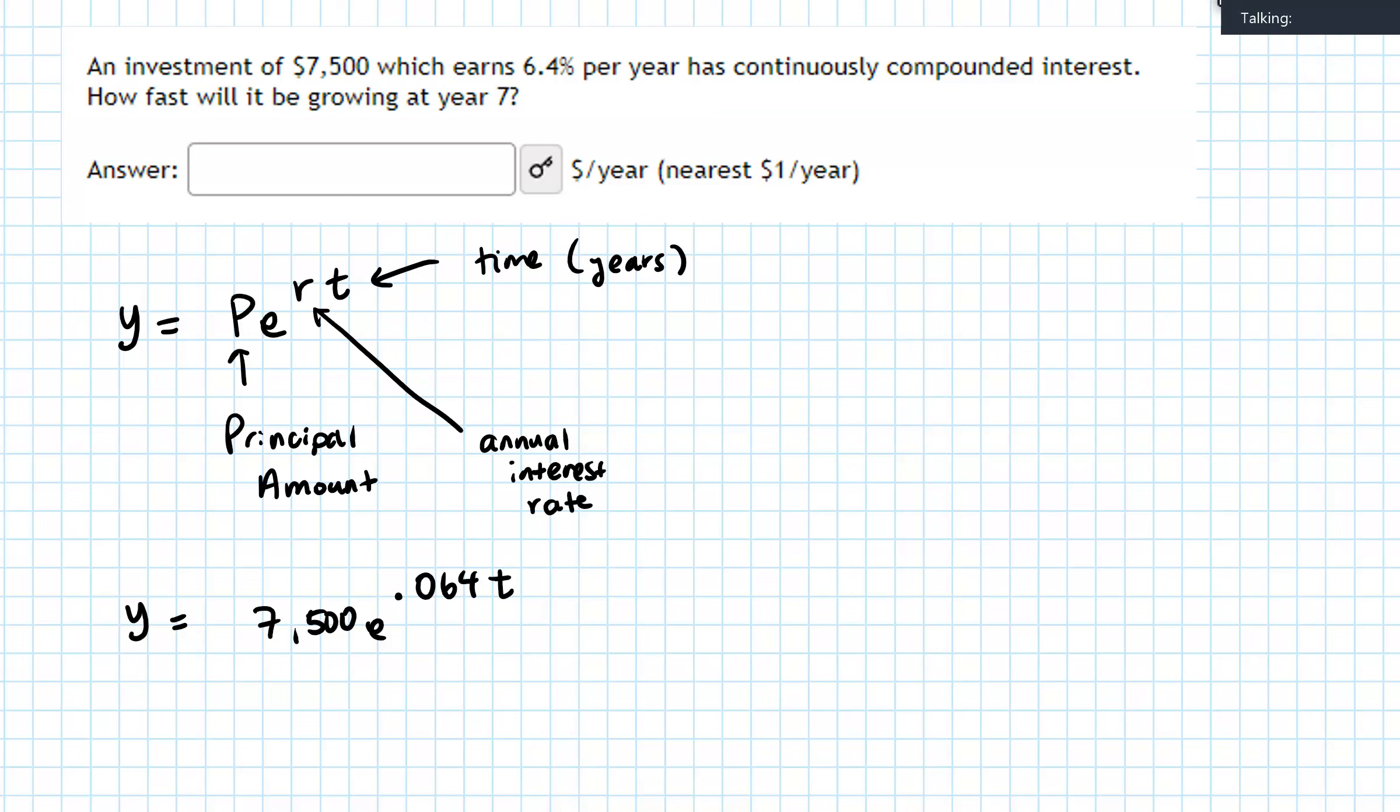So to figure out the rate of change, we take the derivative. So I'm going to take the derivative of that, and we have 7,500 times e to the 0.064t. And then we have to use chain rule by taking the derivative of the exponent, which is going to be 0.064.